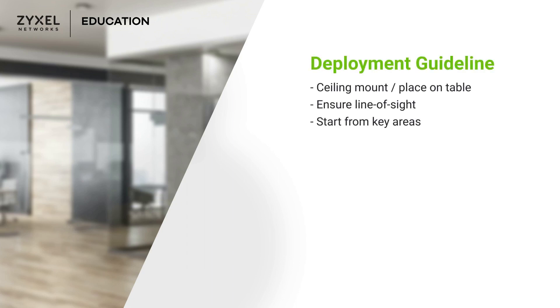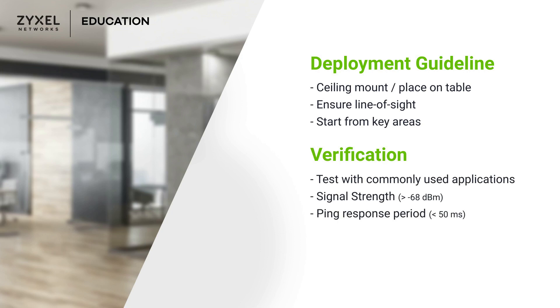Today, we have learned how to place the access point by following some guidelines and identified some places that should be avoided to ensure stable connection. Besides, we also introduced some indicators and approaches to verify your deployment and ensure the robustness of your network. To sum up, placing your access point strategically is crucial to ensure optimal Wi-Fi coverage and performance. By considering these factors throughout the deployment task, you can ensure fast and stable connection to all Wi-Fi users.